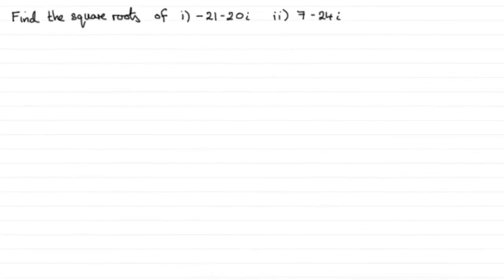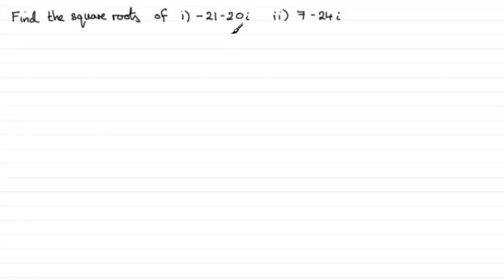In this video I want to show you how we can go about finding the square roots of complex numbers. I've got two examples: find the square root of minus 21 minus 20i, and in the second example the square root of 7 minus 24i. I'll show you how to do the first one, then you could pause the video and have a go at the second one before coming back for the solution.